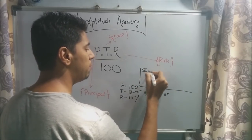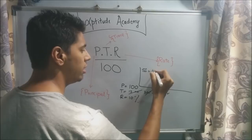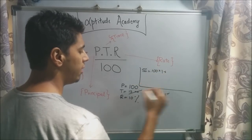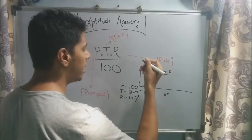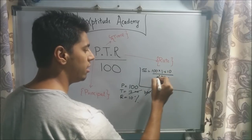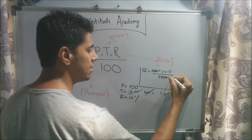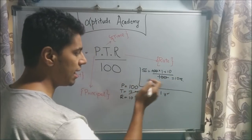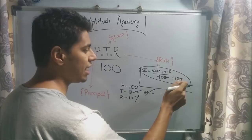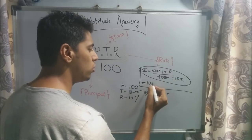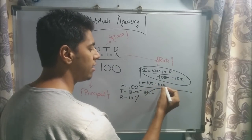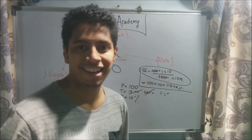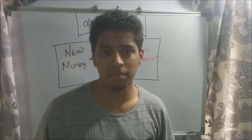Now if we simply plug in these values: SI = PTR upon 100, P is 100, T is one year, R is 10, divided by 100. The 100s cancel, so SI is 10 rupees. You deposited 100 rupees and the simple interest the bank gives you is 10 rupees. So altogether, when you go after one year, you will get 110 rupees.